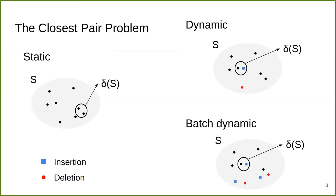Let me first define the problem. The static version of the closest pair problem is: given a point dataset in metric space, we want to find the closest pair of points. The dynamic version maintains the closest pair while allowing single updates such as insertions and deletions. The batch dynamic version maintains the closest pair but allows updates to come in batches.